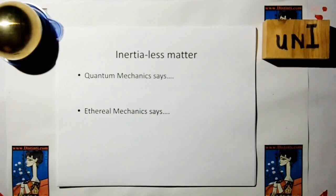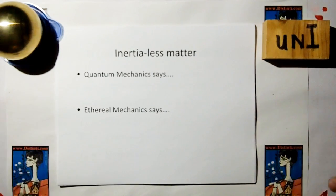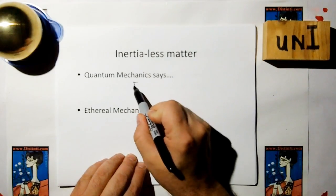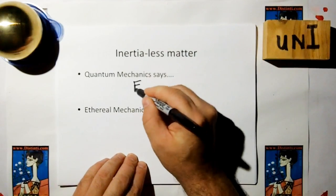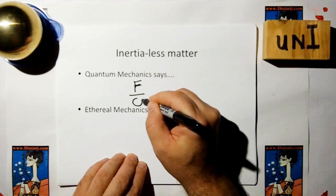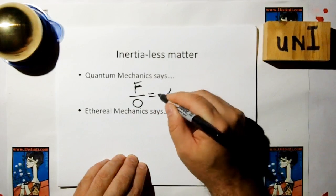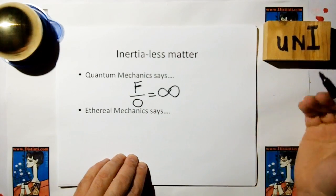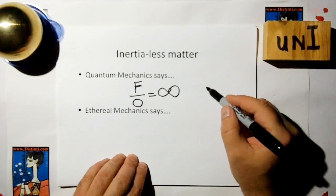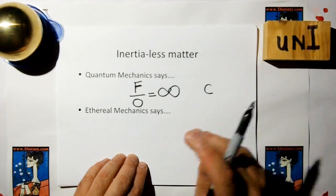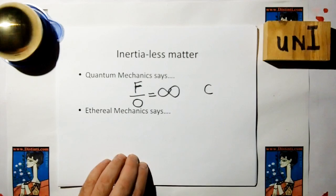What do quantum grease monkeys say about Inertialist Matter? They say force divided by zero inertia is equal to infinite acceleration, and since everything is limited by the speed of light, that means inertialist objects always move at the speed of light. C is the symbol for the speed of light.